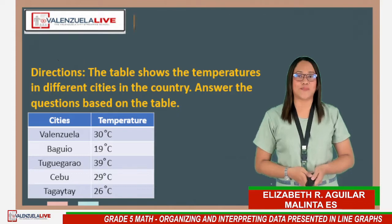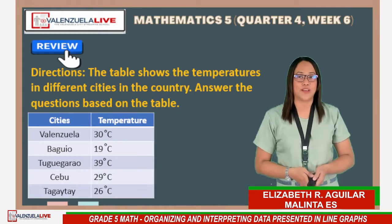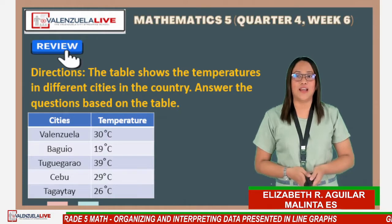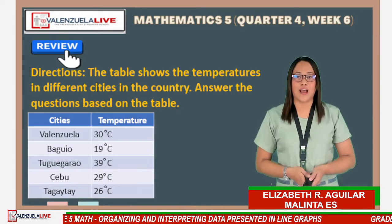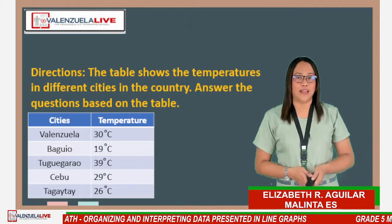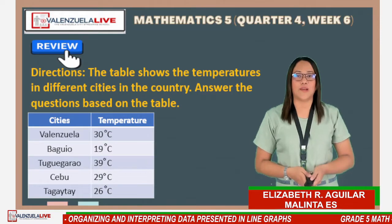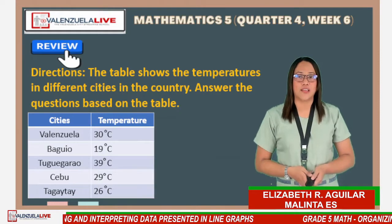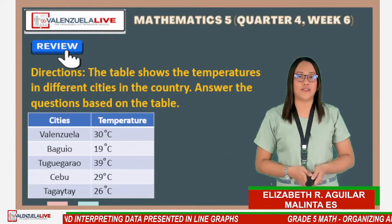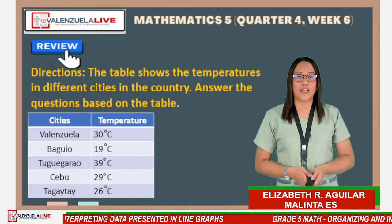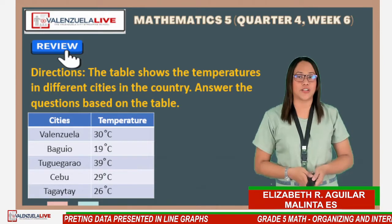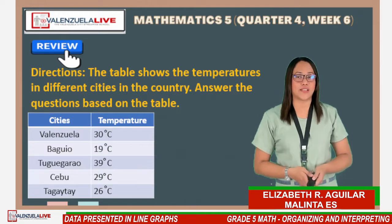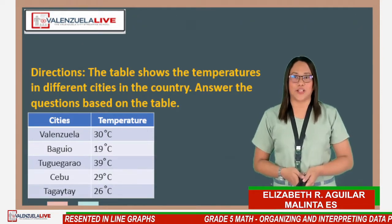In the first column, we have the cities: Valenzuela, Baguio, Tuguegarao, Cebu, and Tagaytay. In the second column, we have the temperature. Valenzuela is 30 degrees Celsius, Baguio is 19 degrees Celsius, Tuguegarao is 39 degrees Celsius, Cebu is 29 degrees Celsius, and Tagaytay is 26 degrees Celsius.